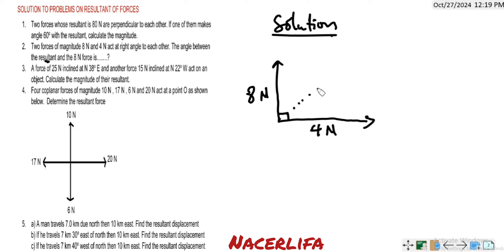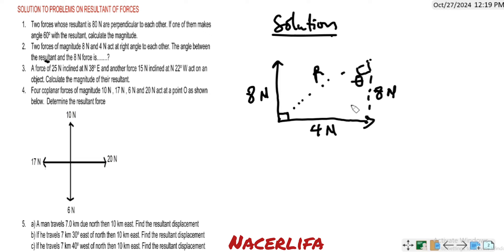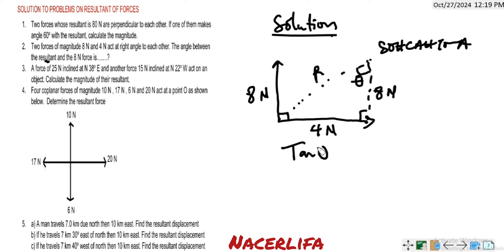If we construct a triangle, these lines become similar. So we have 8 Newton and 4 Newton. The question asks for the angle between the resultant and the 8 Newton force. Using SOH-CAH-TOA: the resultant is the hypotenuse, so we use opposite over adjacent — that is tangent. Tan θ = 4 over 8 = 0.5.